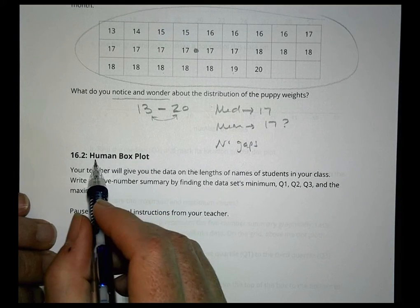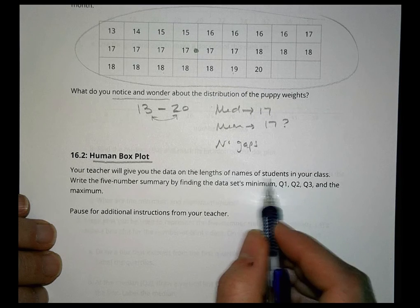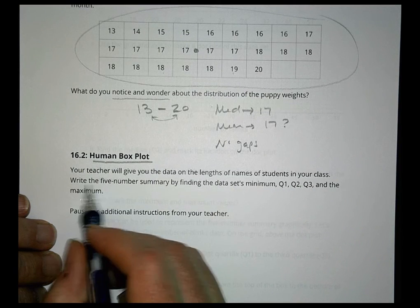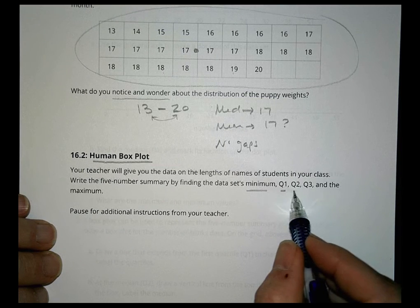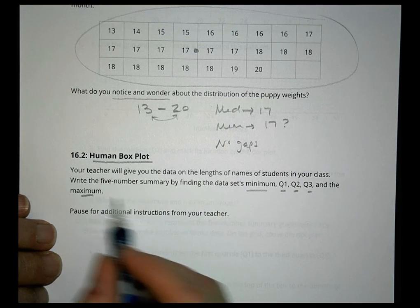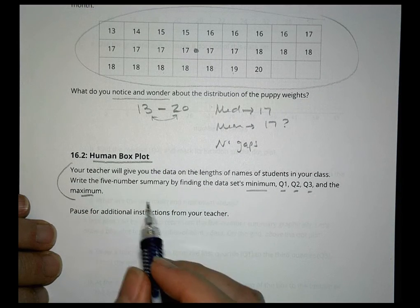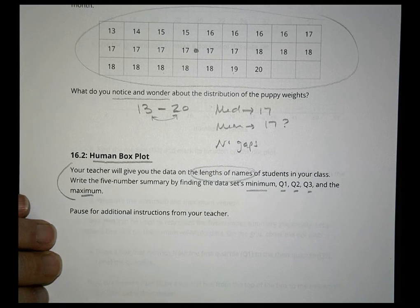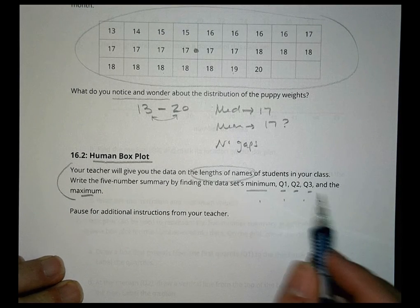And activity two is called the human box plot. For this thing, your teacher is going to give you the data on the lengths of names of students in your class. You're going to write the five number summary by finding the data set's minimum, quartile 1, 2, 3, and the maximum. So you're going to take that data and figure that out based upon what your teacher gives you for the lengths of names.